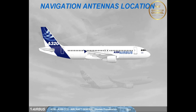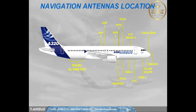Let's now have an overview of the location of the navigation antennas: Radar, Localizer and Glide Slope, DME 1 and 2, ATC, GPS 1 and 2, Marker, TCAS, ADF1 and 2, Radio Altimeter, ELT Emergency Locator, and VOR 1 and 2.